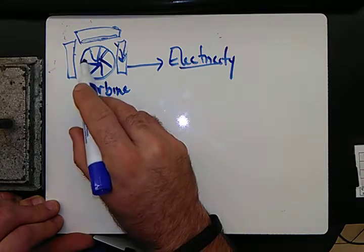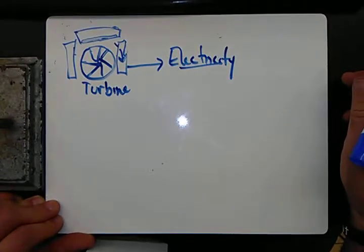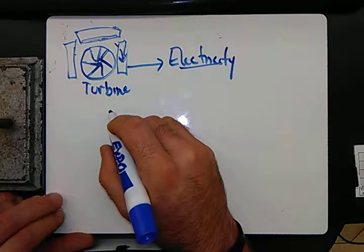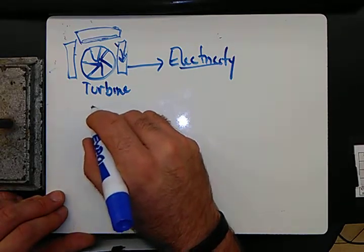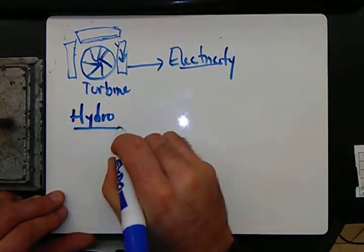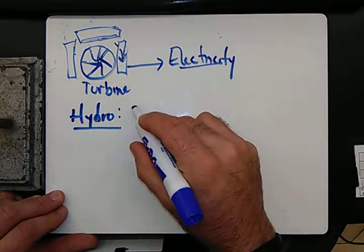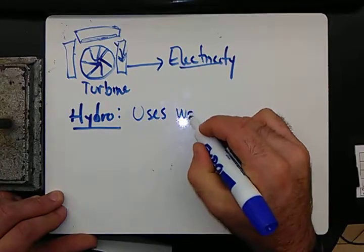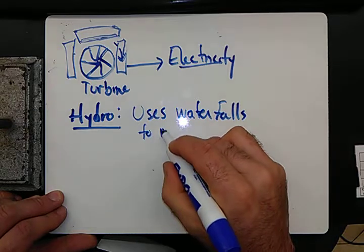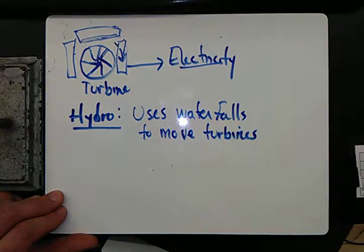People would heat up a power source to shoot steam out at this and make it move. Now there are also other ways to have this thing move. We can also look at hydro — a hydro plant, which uses a waterfall to move turbines.